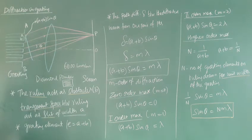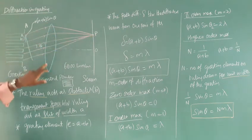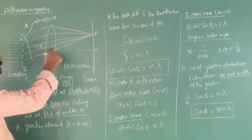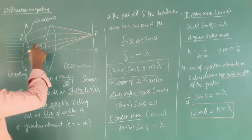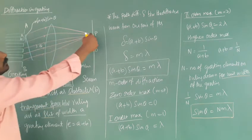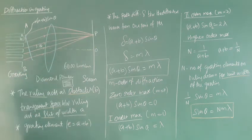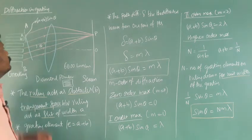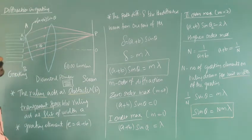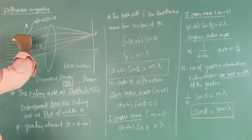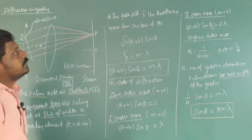The diffracted waves are focused at point P using a convex lens. A line is drawn at the center of the grating, and the diffracted wave makes an angle theta. P is the point where we get a bright maximum. The path difference delta between the diffracted waves from one pair of points is delta equal to (A plus B) sin theta.